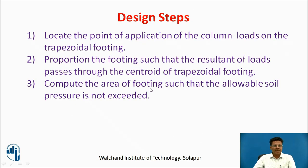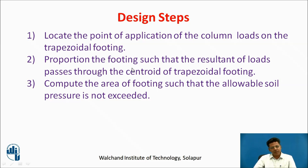Let us discuss the design steps for proportioning the combined footing. Firstly, locate the point of application of column loads on the trapezoidal footing. Then, proportion the footing such that the resultant of loads passes through the centroid of the trapezoidal footing, and compute the area of footing depending upon allowable soil pressures.